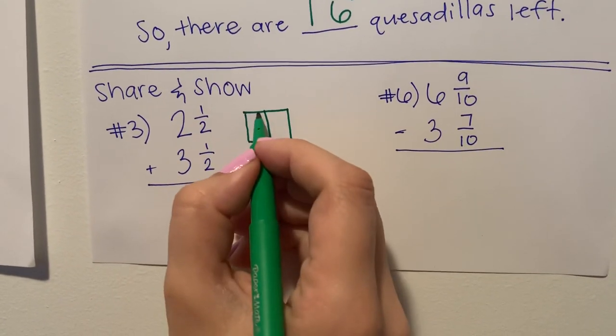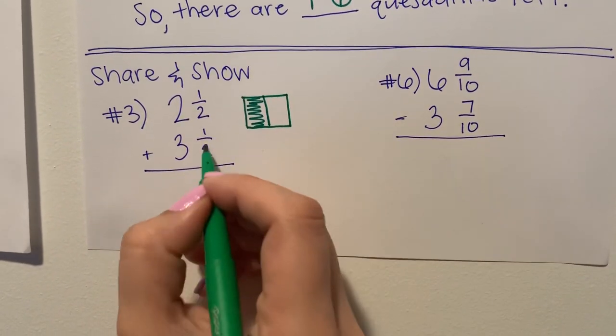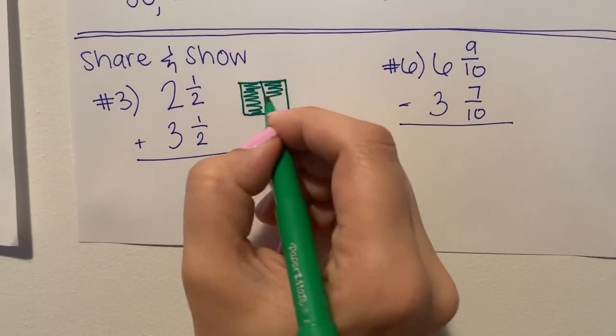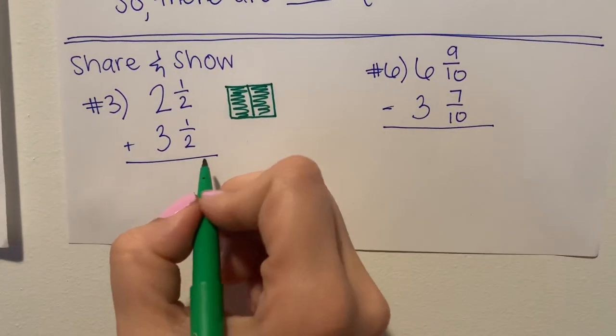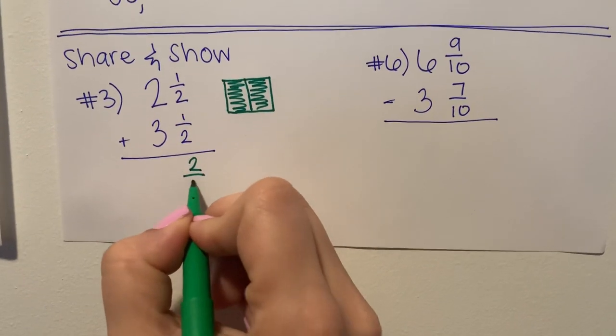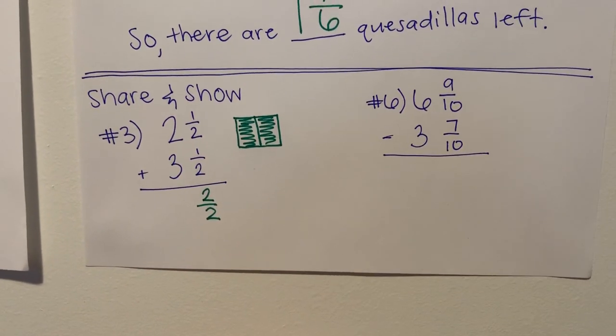In this case, I'm going to shade one half, and I'm going to shade one half as well. And that gets me to one whole. So I know that one half plus one half equals two halves, which is also equal to one whole.